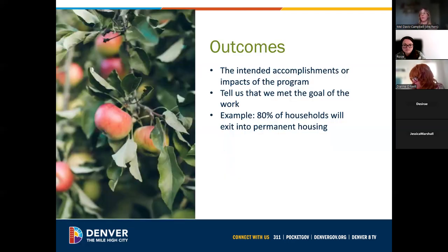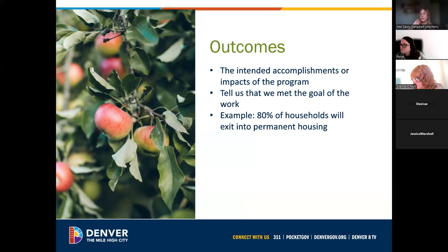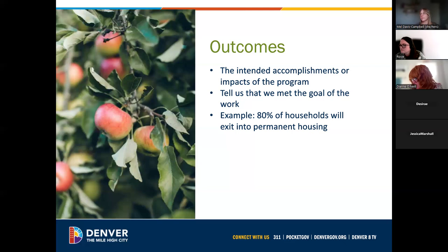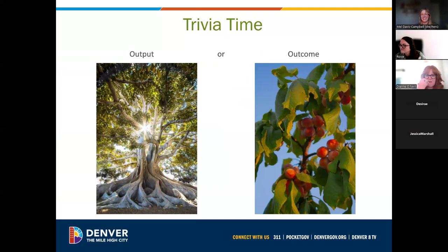Lastly, we come to outcomes — the fruit. This is the intended accomplishment or impact of the program, and it's how we know we met the goal of the work. Most commonly in your contracts, the outcome will be related to a housing outcome. You might see an outcome like: 80% of households will exit into permanent housing. We have some trivia questions — a chance to practice identifying whether something is an output or an outcome. Type in the chat if you think it's an output or an outcome.